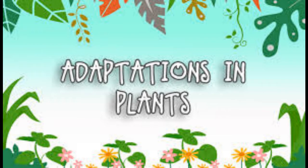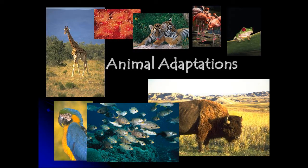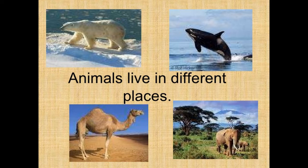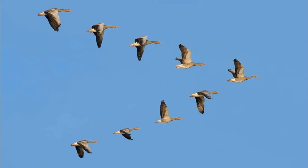Welcome. In the last class we studied about adaptations in plants. Today we are going to learn about adaptations in animals. Like plants, animals also show many adaptations according to the habitat they live in. These adaptations increase the survival chances for those organisms. Animals live in different habitats like in water, on land in deserts and mountains, and even in air. Example: birds spend most of their time in the air.